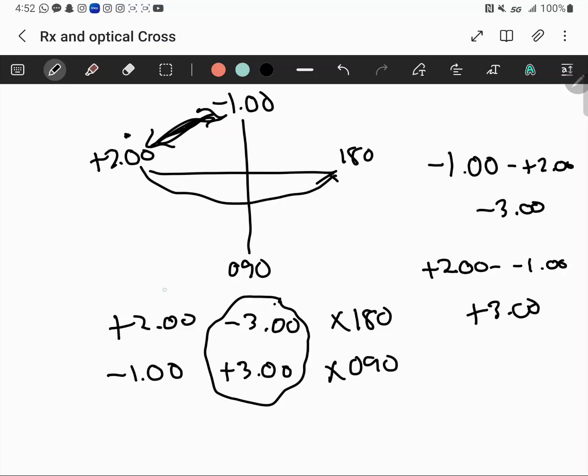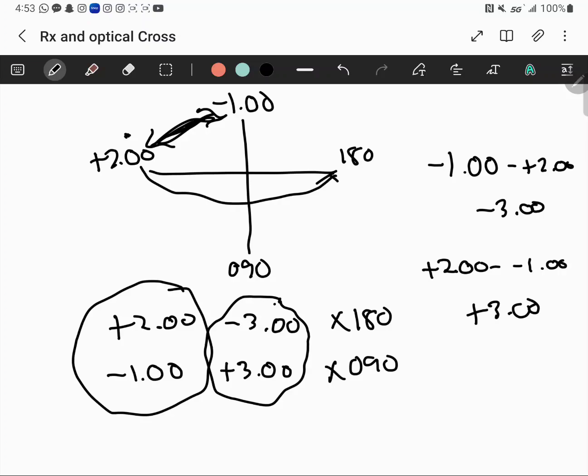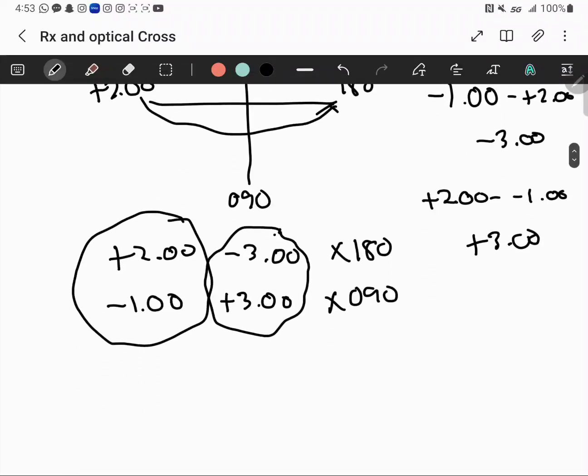Negative 1 and plus 2 are sphere powers that we write onto a prescription. Negative 1 is the sphere power for plus cylinder version, and plus 2 is the sphere power for negative cylinder or minus cylinder form Rx. These should all be very quick and easy.